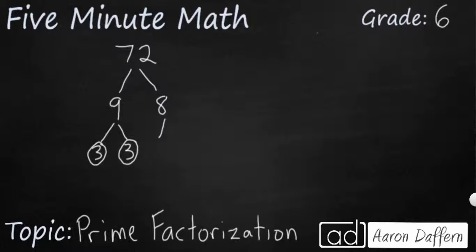Now I'm going to go over here to my 8. I'm not going to do 1 times 8, but I'm going to do 4 times 2. 2 is a prime number. The only way to get to 2 is 1 times 2. But 4 can be broken down into 2 times 2.